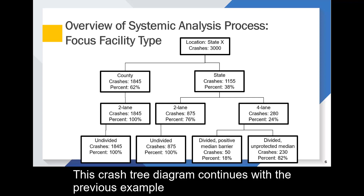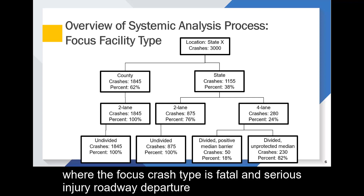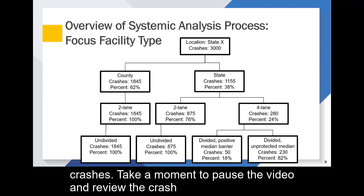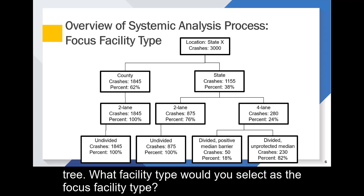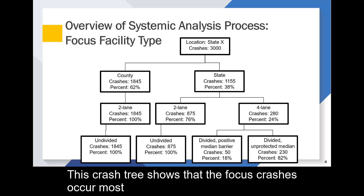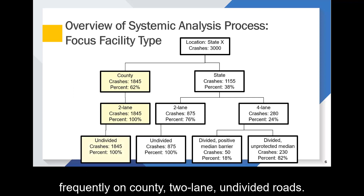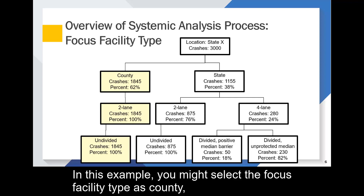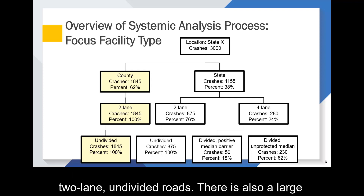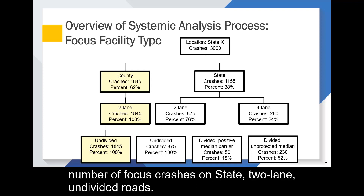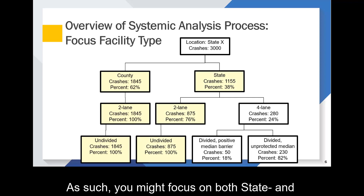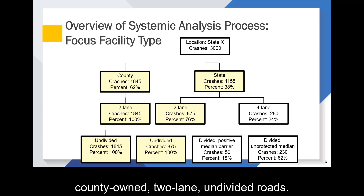Focus facility types are those locations where the focus crash type is most prevalent. During the systemic safety analysis process, crash trees help to narrow the area of interest and number of potential miles or intersections to examine while still including a large number of crashes. This crash tree diagram continues with the previous example. Take a moment to pause the video and review the crash tree. This crash tree shows that the focus crashes occur most frequently on county two-lane undivided roads. There is also a large number of focus crashes on state two-lane undivided roads, so you might focus on both state and county-owned two-lane undivided roads.